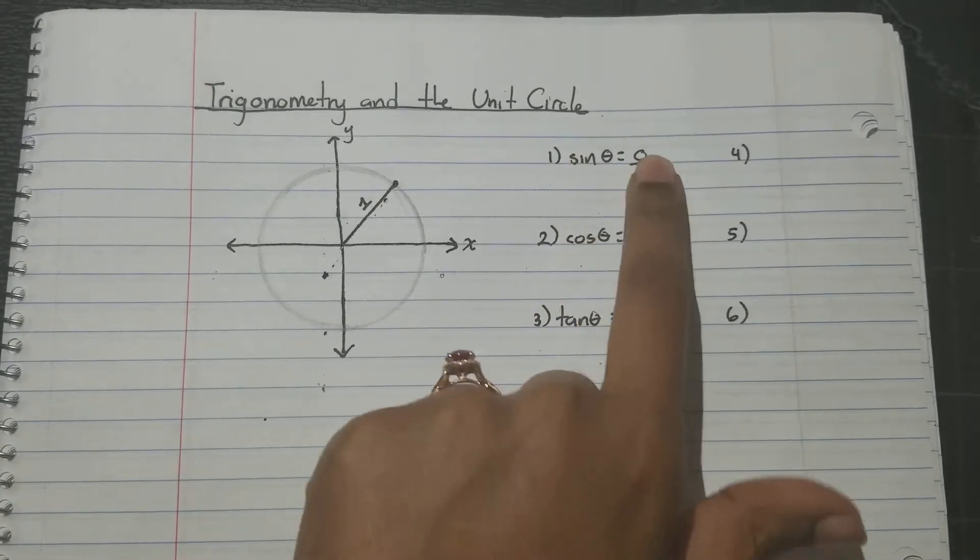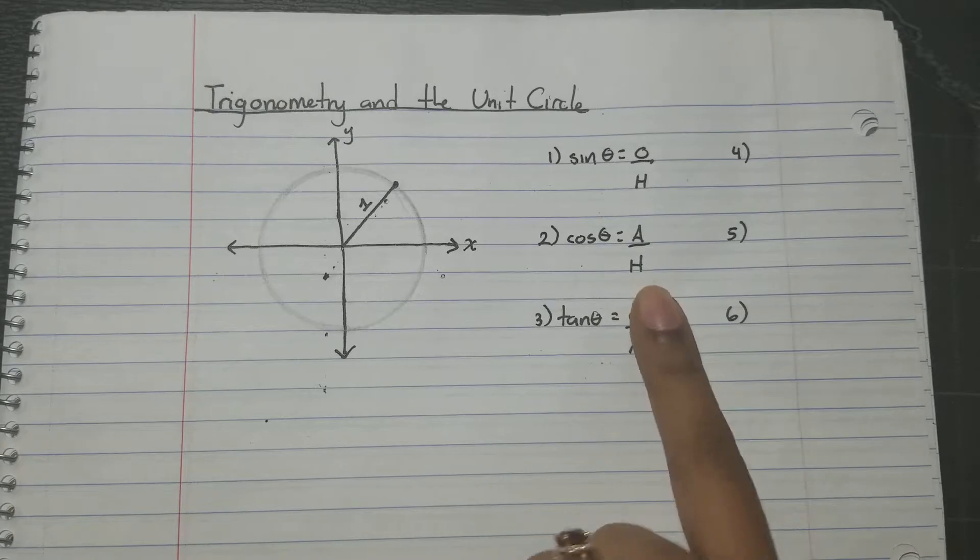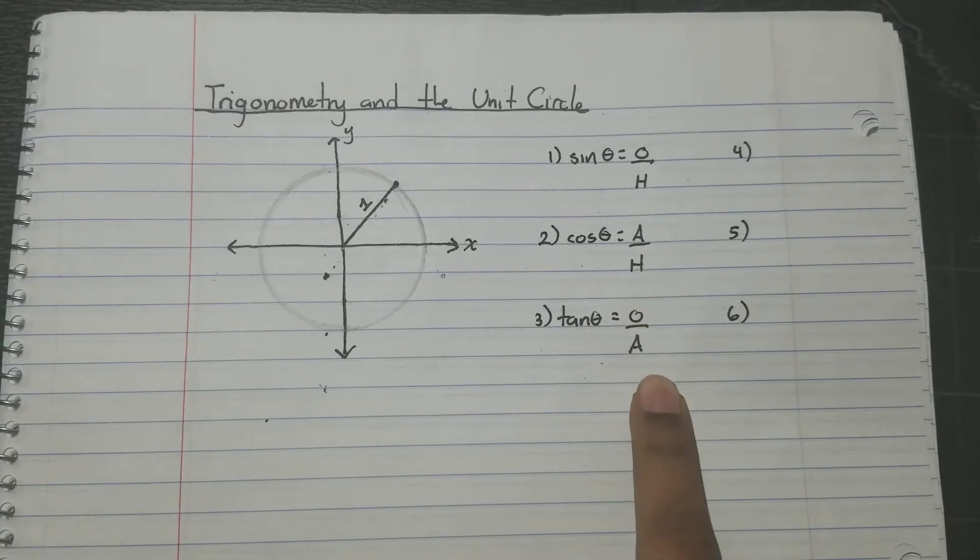Sine theta is opposite over hypotenuse. Cosine theta is adjacent over hypotenuse. Tangent theta is opposite over adjacent.